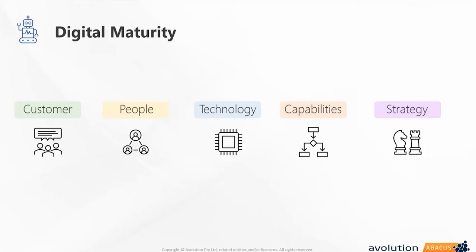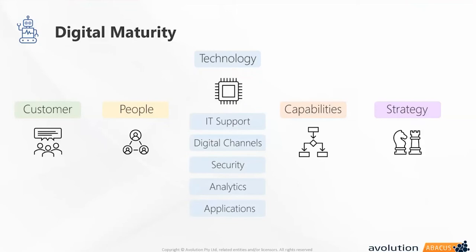People internally may be susceptible to change or resistant to it, so we must support each part of those processes. Capabilities come down to things like the operating model — enhancing organizational effectiveness and utilizing technology to drive different processes. Strategy reflects digital initiatives embedded within the overall business strategy. For today's focus — technology — digital maturity covers things like IT support, channels, security aspects, and system additions or removals.